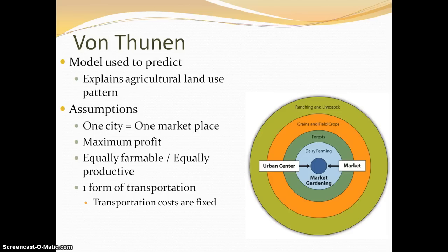Von Thunen's model is used to explain and predict agricultural land use patterns. Specifically, he is looking at European villages and European towns in the 1800s. Another thing that's important to point out is that this is going to specifically refer to commercial forms of agriculture.